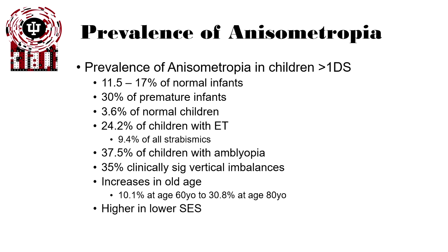In normally born infants, anisometropia can be anywhere between 11% to 17%, but that amount actually goes up with premature infants. Children with exotropias, esotropias, and strabismus have a higher incidence of anisometropia. And 37% of children with amblyopia have anisometropia, with anisometropia being the primary cause of their amblyopia in those cases.